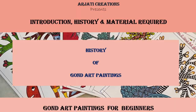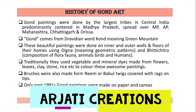Let us start with an introduction to Gond Art. Gond Art paintings were done by the largest tribe in central India, predominantly centered in Madhya Pradesh but spread over MP, Andhra Pradesh, Maharashtra, Chhattisgarh, and Orissa. Gond basically comes from a Dravidian word meaning 'pond' or 'green mountains.'